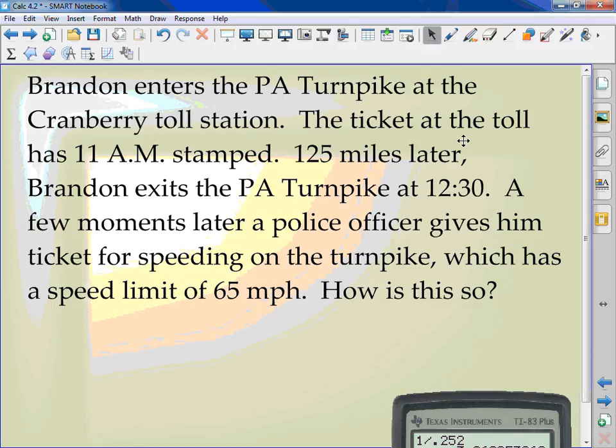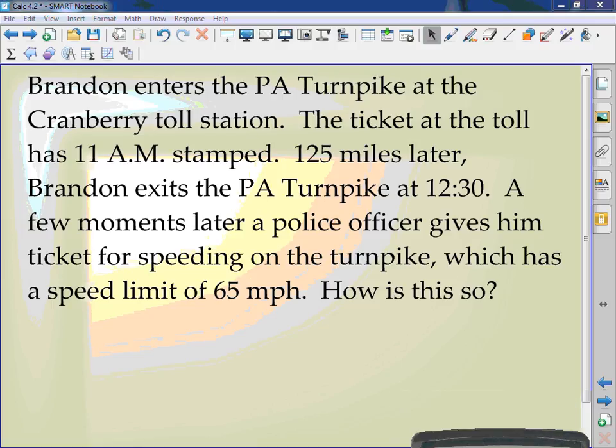Let's try this one. It's a word problem. Brandon enters the PA Turnpike at the Cranberry Toll Station. The ticket at the toll has 11 a.m. stamped. 125 miles later, Brandon exits the PA Turnpike at 12:30. A few moments later, a police officer gives him a ticket for speeding on the turnpike, which has a speed limit of 65 mph. How is this so? The cop was not following him. The cop was just sitting at the exit. And the first thing he paid his ticket, he pulled him over.